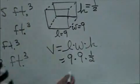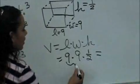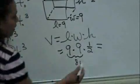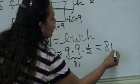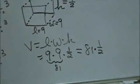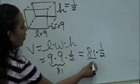So we're going to go ahead and multiply. We get 9 times 9 is 81. So 81 times a half, and 81 can be 81 over 1.